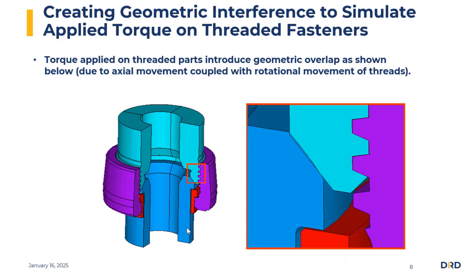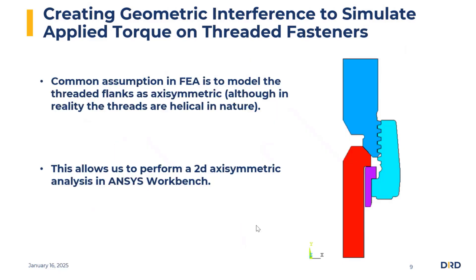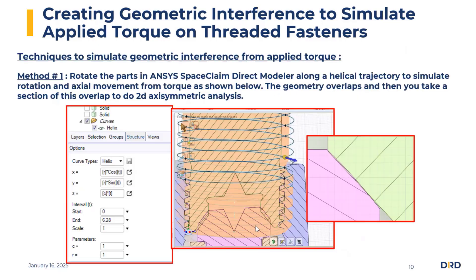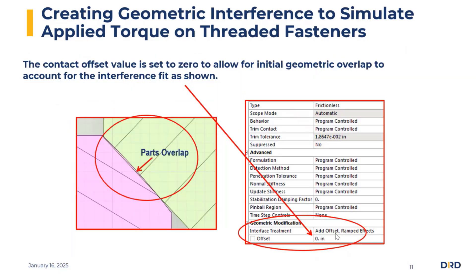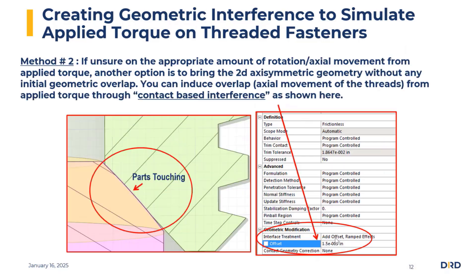Now, how do you create the geometric interference in order to simulate the applied torque on the fastener? We can do it a couple of ways, which we'll talk more about in the webinar. One is to go into SpaceClaim and create an interference based on the geometry, and in the contact you can set the offset to zero. Another method is if you don't create the geometric overlap to produce the preload from the torque, you can add a contact-based offset to create that interference.